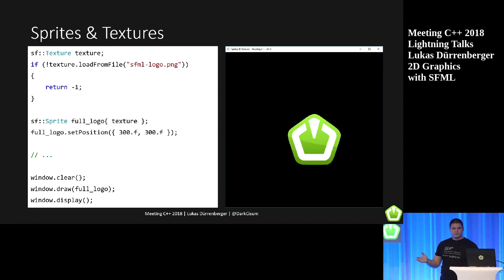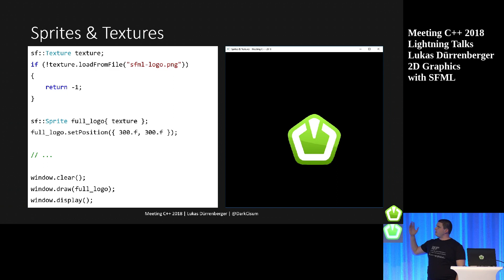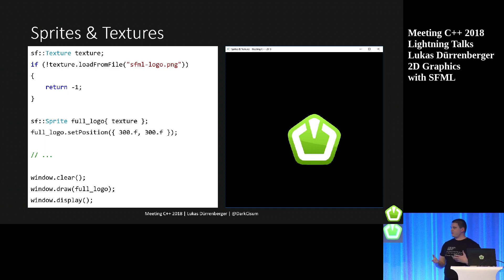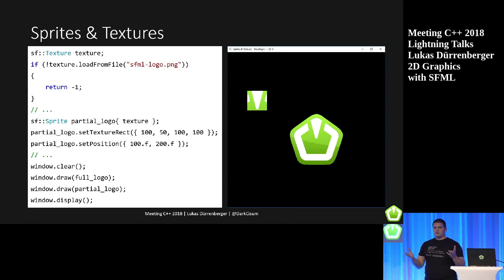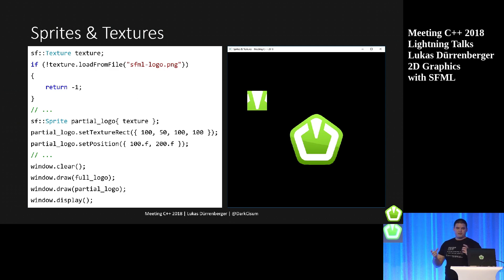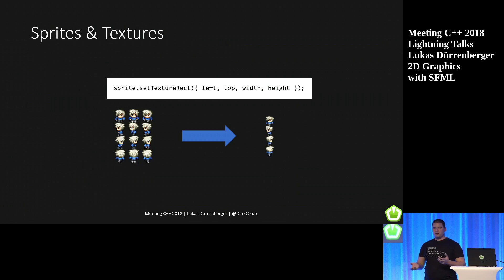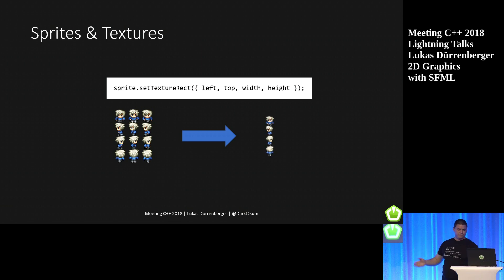Oftentimes you don't just want to draw simple shapes — you can set a texture. You can load a texture from a file; always make sure it actually loads correctly. Then you can assign it to a sprite and transform it however you want, and render it again. Sometimes you don't want the whole image but only part of it, so you can set a texture rectangle to get just one part of that texture. This is especially interesting for animations — if you have a tile set with many different frames, you can pick one specific frame and change just the texture rectangle to get an easy animation if you time them correctly.